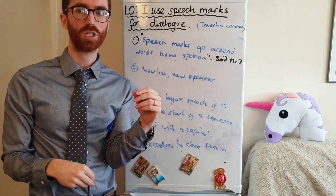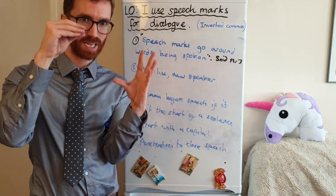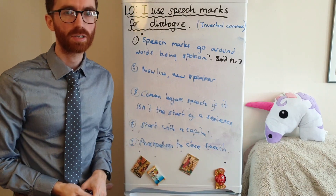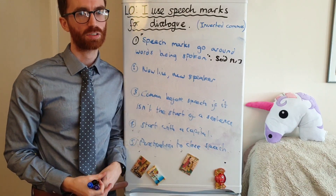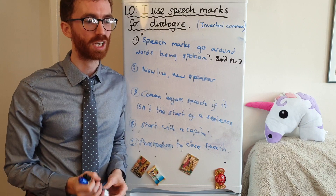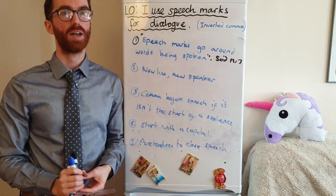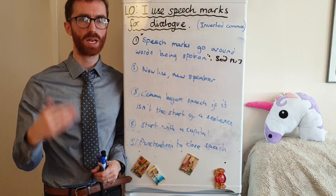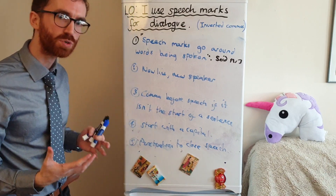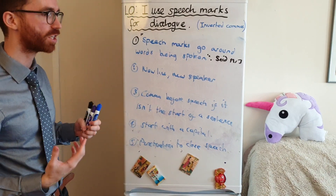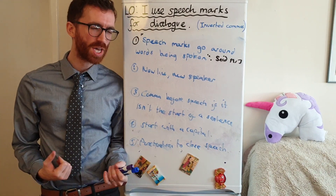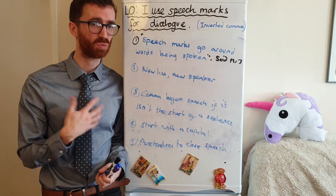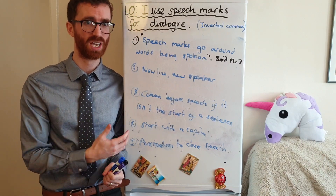Dialogue is a conversation between two or more people. Why is it really important to use speech marks for dialogue? Well, the reason is it really enhances our work — and remember we are all about enhancing our work, making it better, improving it. If we have a conversation between the characters, I'm gonna learn a lot more about them. It makes the story flow better. We're humans, we talk to each other — you want to see it in a story.